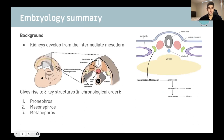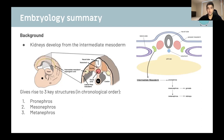Just some very basic background on how the kidneys actually develop. The kidneys arise from the intermediate mesoderm. There are three structures that the intermediate mesoderm gives rise to: the pronephros, mesonephros, and metanephros — these are all ducts that come out from the intermediate mesoderm.